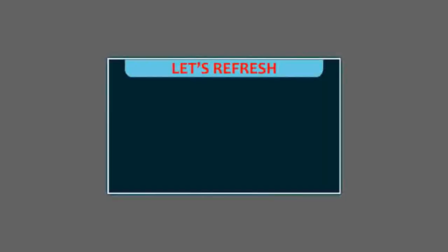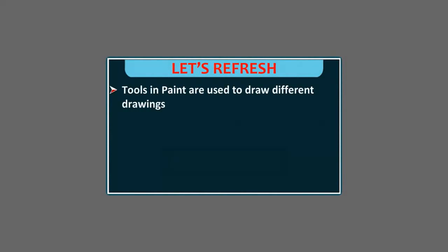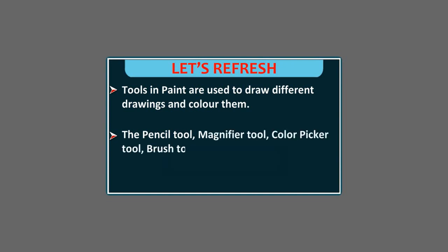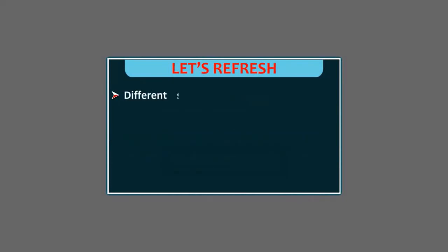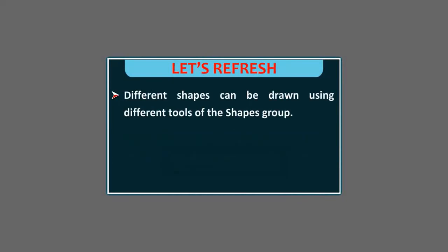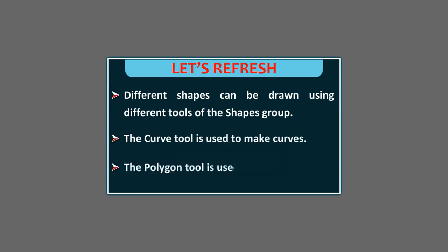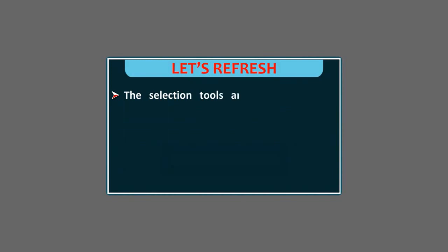Let's refresh. Tools in Paint are used to draw different drawings and color them. The Pencil tool, Magnifier tool, Color Picker tool, Brush tool, and Text tool are used to draw and edit pictures. Different shapes can be drawn using tools of the Shapes Group. The Curve tool is used to make curves and the Polygon tool is used to draw a polygon. The Selection tools are present in the Image Group of the Home tab.